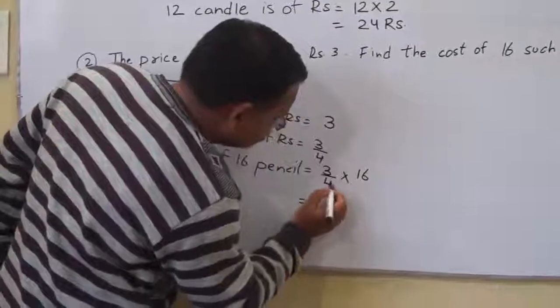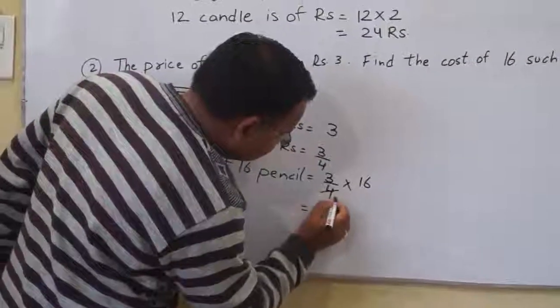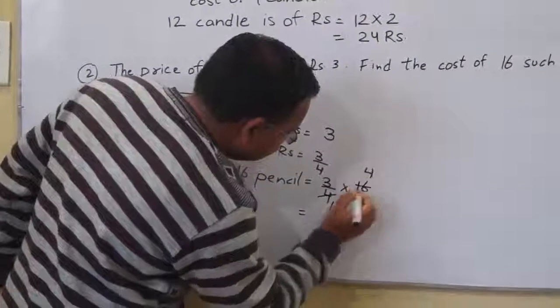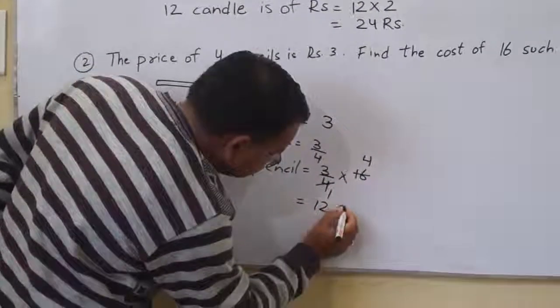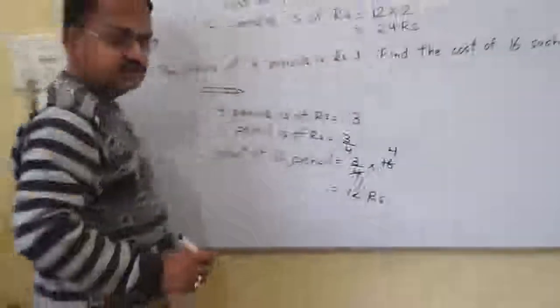That is 4 multiplied by 3, which equals 12 rupees. Thank you students.